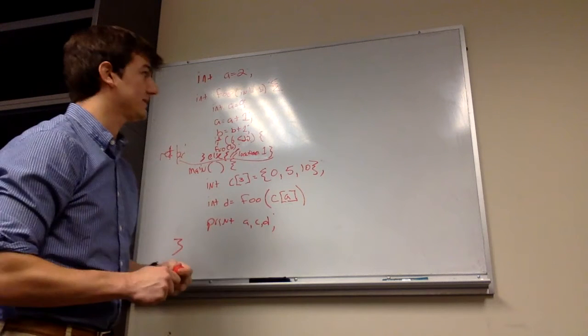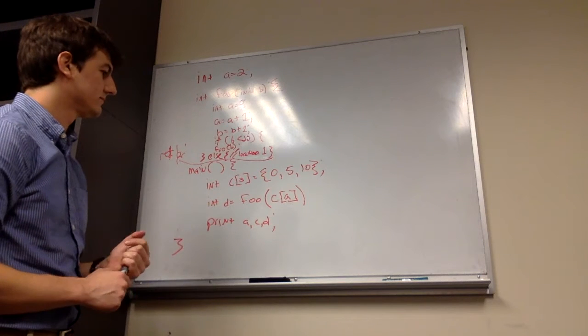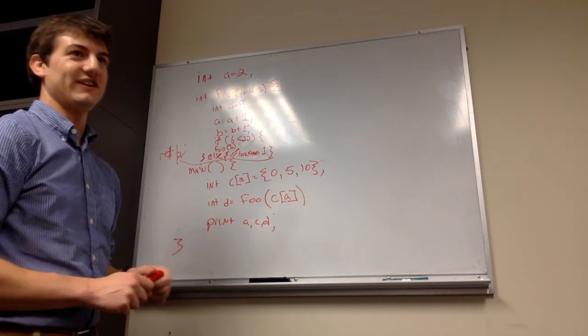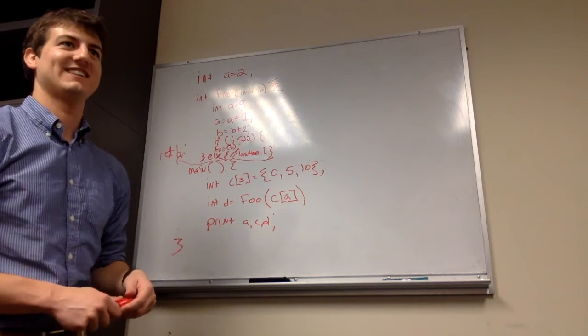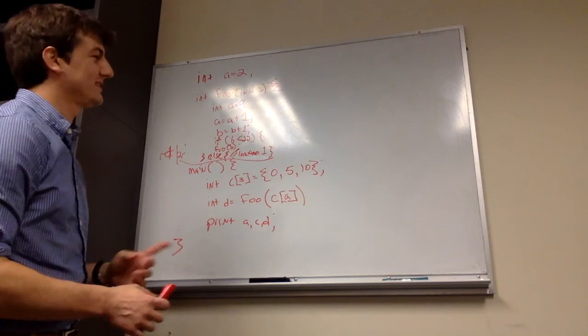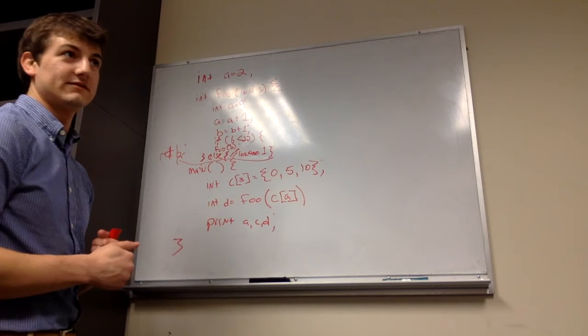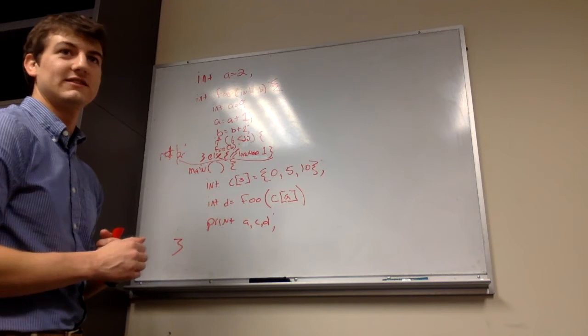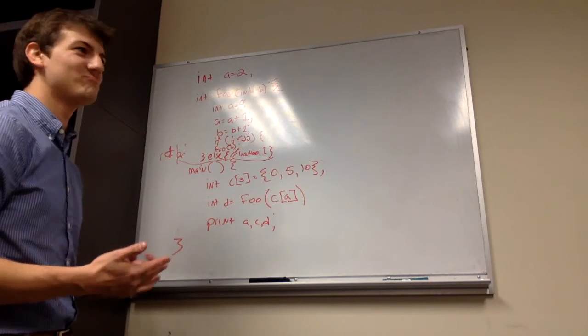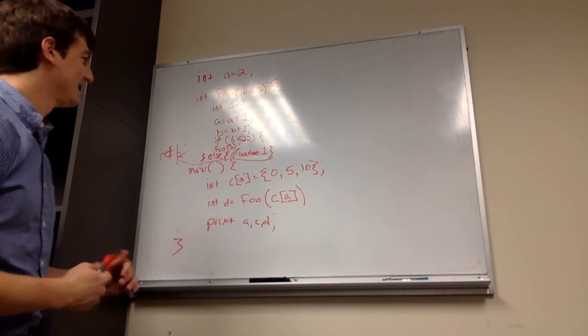Before we begin, is the assumption that we're doing pass by value always on this one, unless otherwise identified? It should always be identified. If it's not identified, you should ask. So yes, pass by value. Because that would kind of change how you drew the stack a little bit.